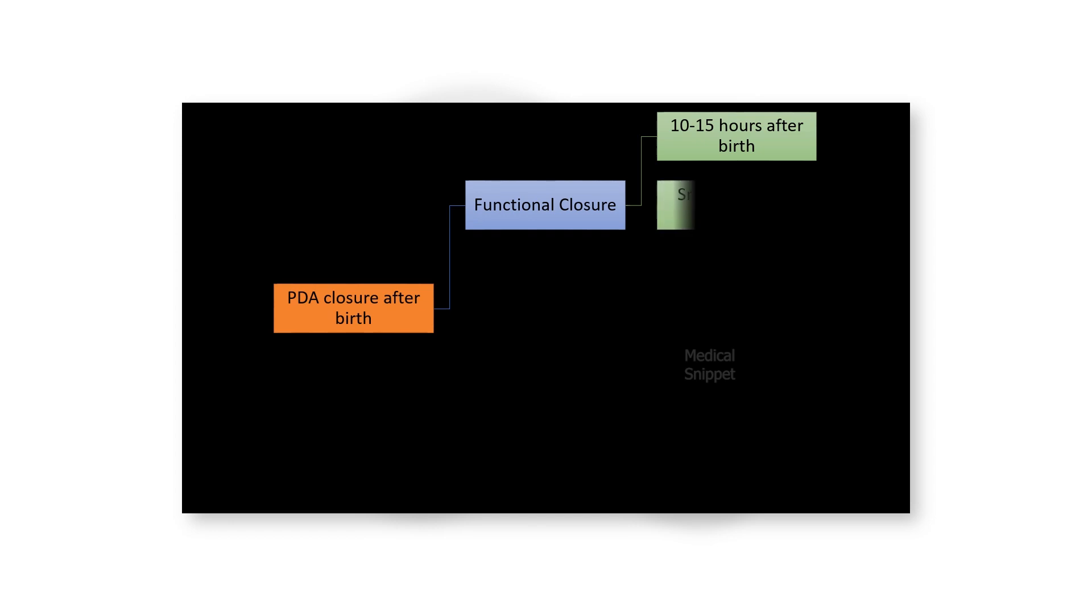In normal full-term babies, PDA closure occurs in two stages. The first is functional closure, completed by 10-15 hours after birth. It is due to smooth muscle contraction of ductus arteriosus and approximation of intimal cushions.